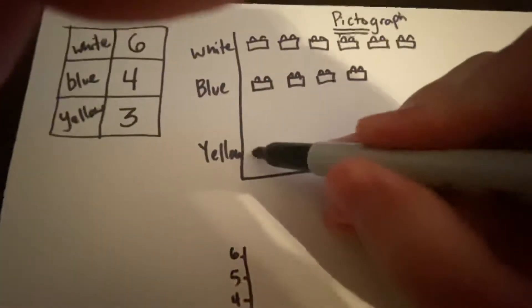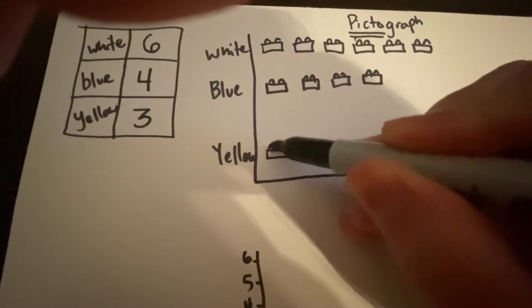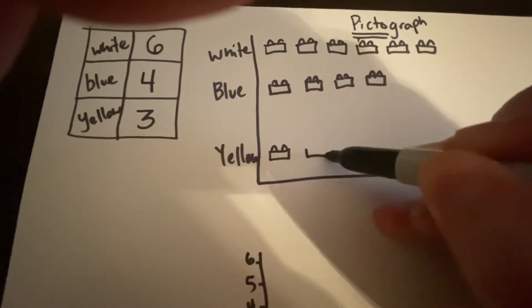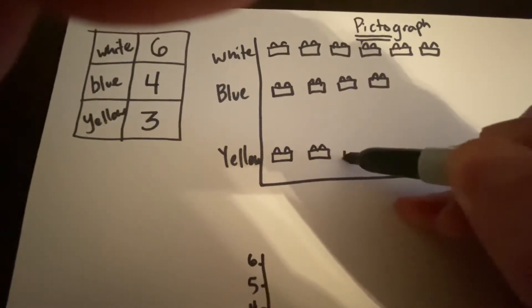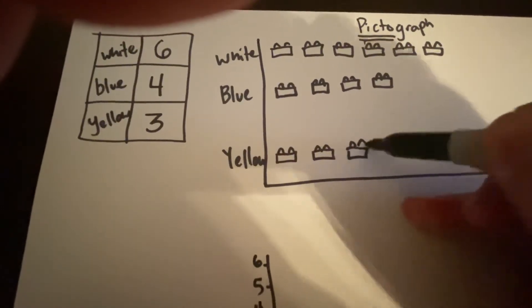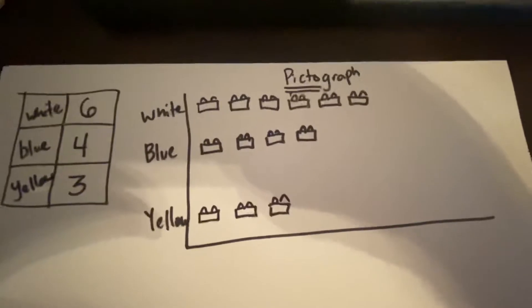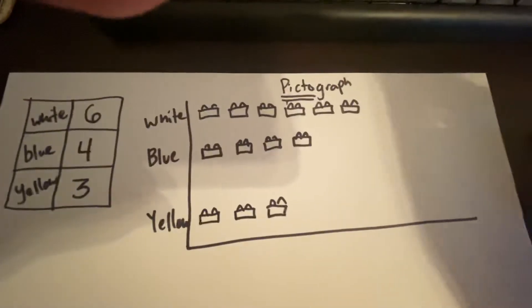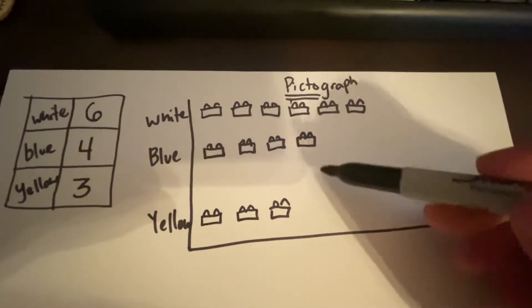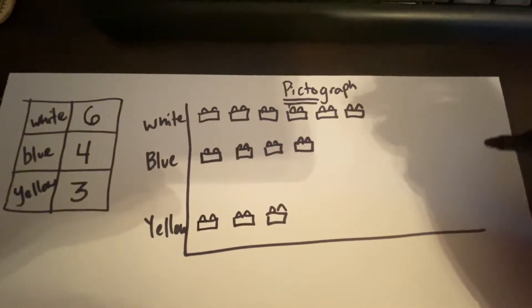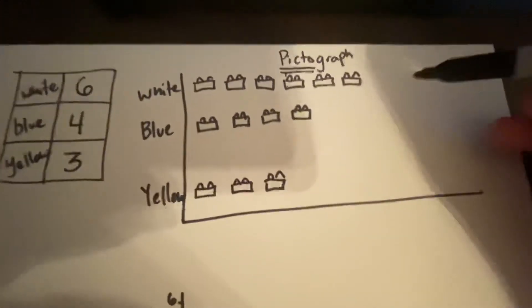And then with yellow, we had three. One, two, three. Now with that, we can answer some questions. Like for example, if I wanted to know which color Lego did I have the most of, you should be able to tell me that I have the most white.